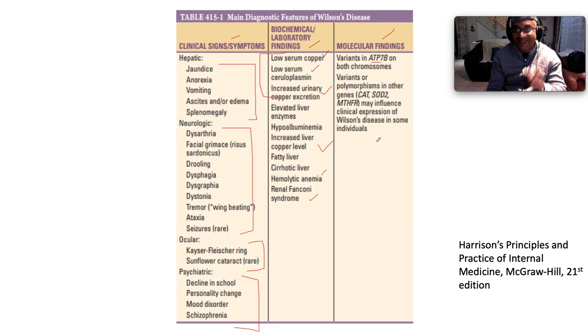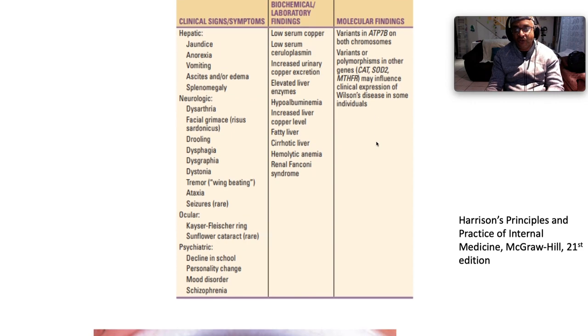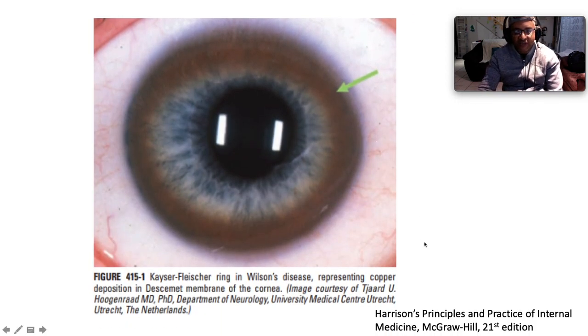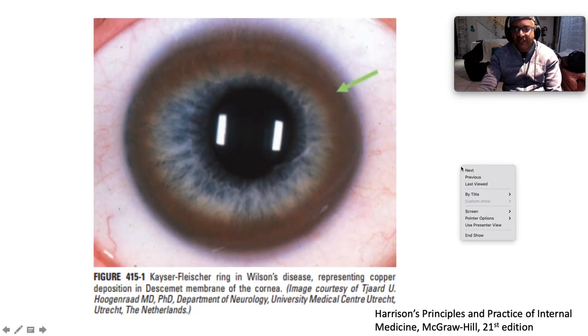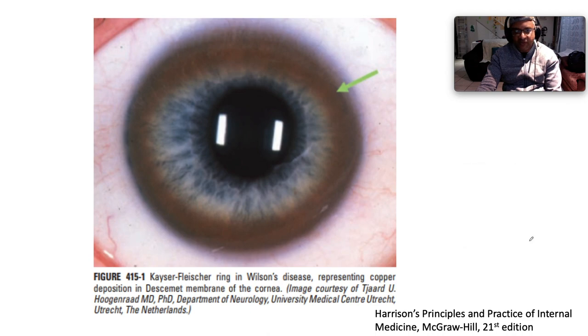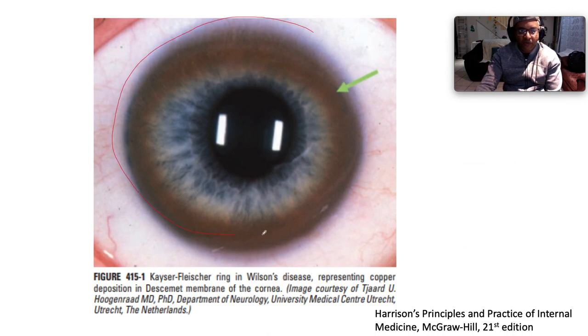Molecular findings in Wilson disease include variants in the ATP7B gene on both chromosomes, with more than 60 mutations known. Here is the classic image of Kayser-Fleischer rings, representing copper deposition in Descemet's membrane of the cornea.